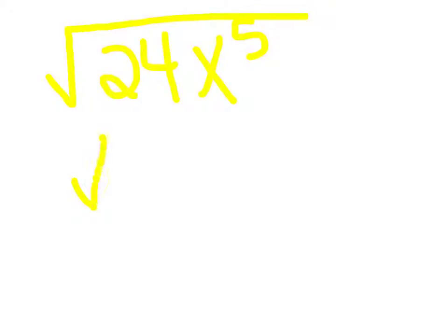This time we're going to break up 24, which would be 4 times 6 times x to the 5th power. As you know, 4 is a perfect square, so when it's a square root, it's a 2.